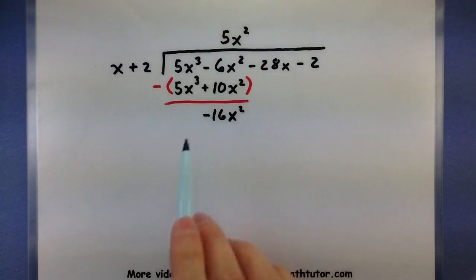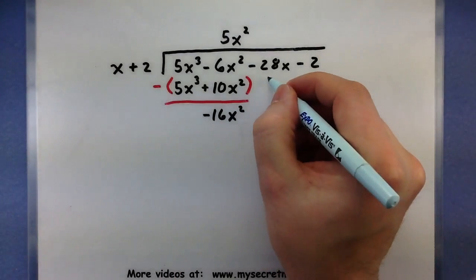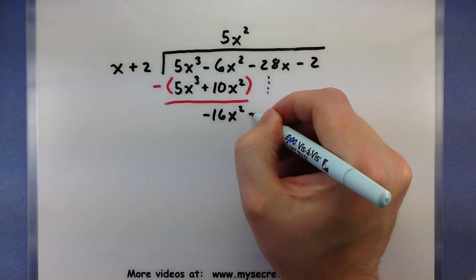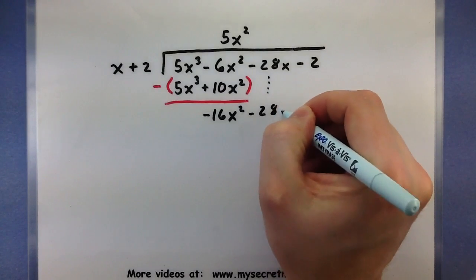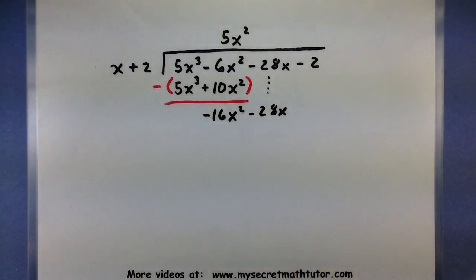So it looks like we have a -16x², and we want to continue doing this division process. So I'll bring down the next term, and we'll repeat this one more time.